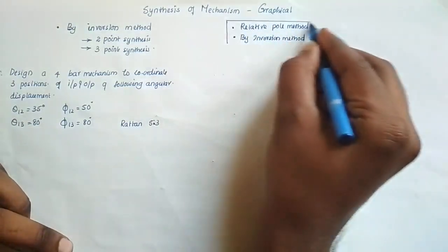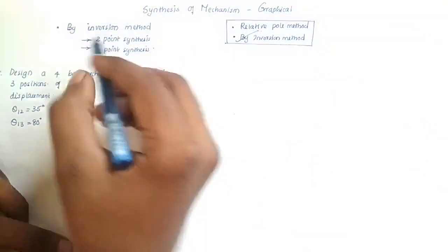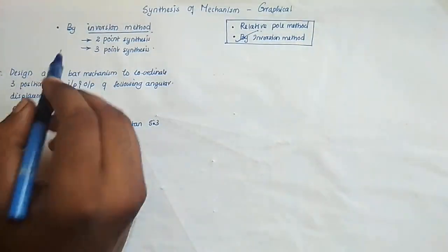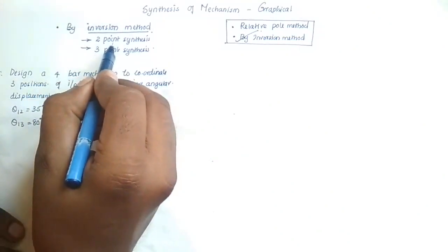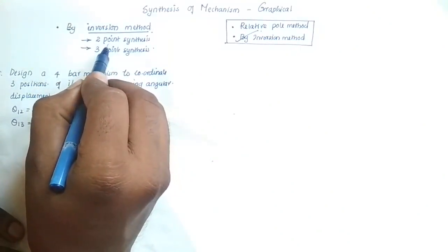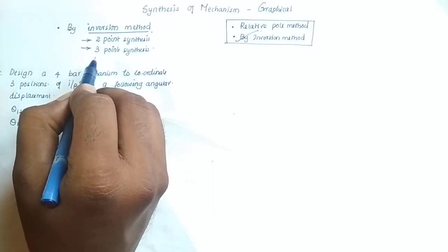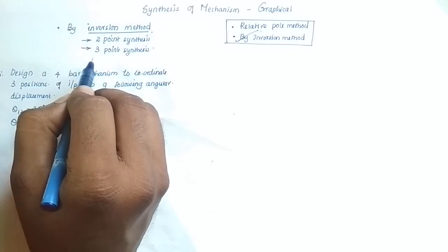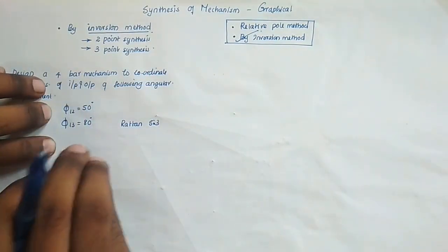In this lecture we are going to see how to graphically synthesize a mechanism using the inversion method. During synthesis, we have two-point synthesis and three-point synthesis. For three-point synthesis, we know three precise points of the mechanism — three accurate output positions. If the input theta moves from one position to a second position, we determine where the output link component should be.